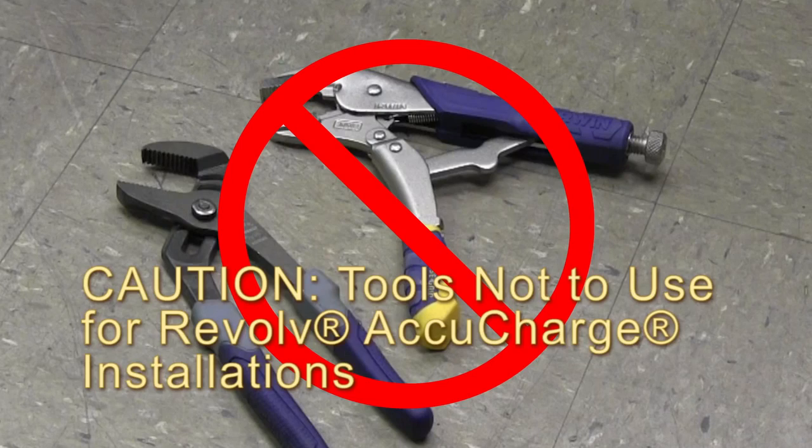When installing AccuCharge systems with FitRite fittings, never use water pump pliers, vice grips, or things of this nature which will deform the fitting. Use only adjustable or fixed wrenches.